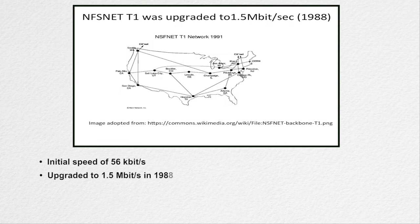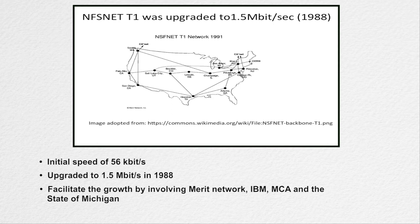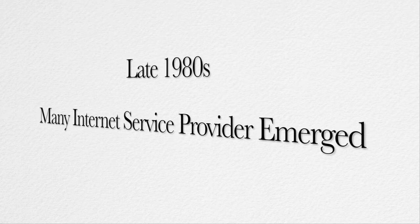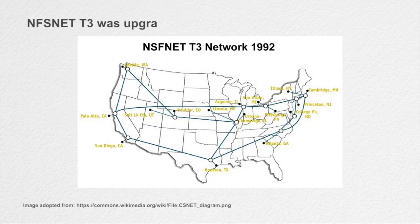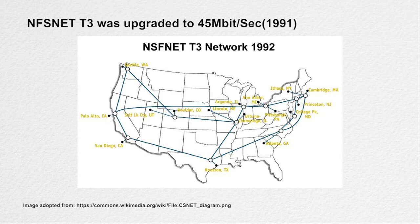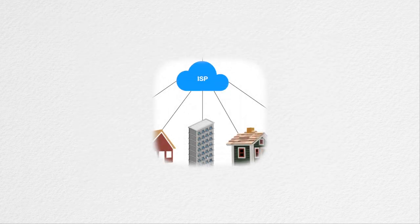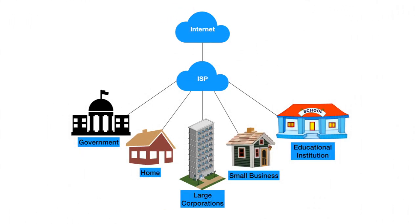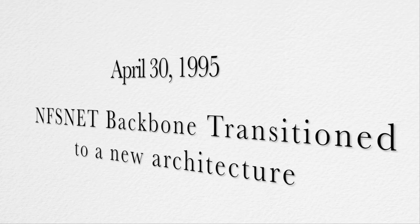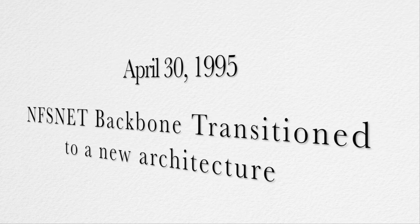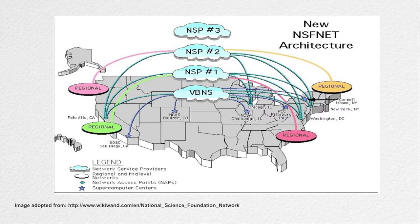It was upgraded to 1.5 megabits per second in 1988 to facilitate the growth of the network by involving Merit Network, IBM, MCA, and the State of Michigan. After the corporates realized the strength and merit of this network, they participated in its development to reap its benefits. By late 1980s, many internet service providers emerged to provide the backbone for carrying network traffic. By 1991, NSFnet was expanded and upgraded to 45 megabits per second. Many commercial ISPs provided backbone service, popular among corporates. On 30th April 1995, the NSFnet backbone was decommissioned.